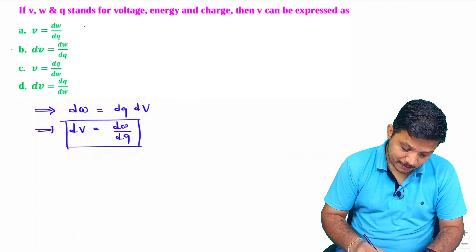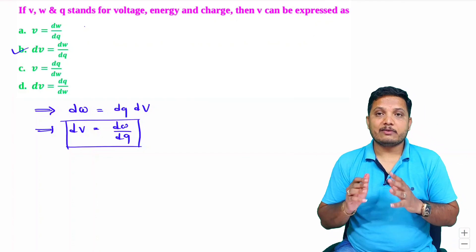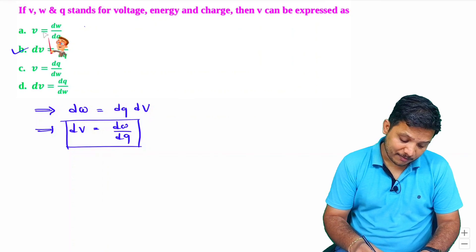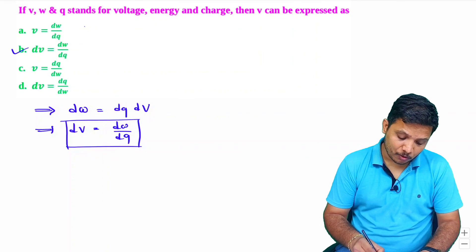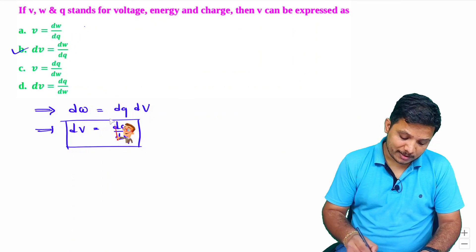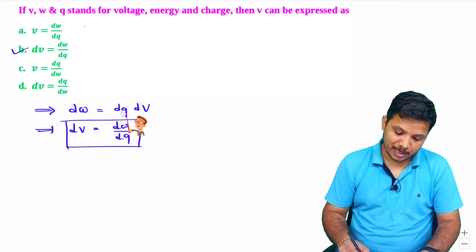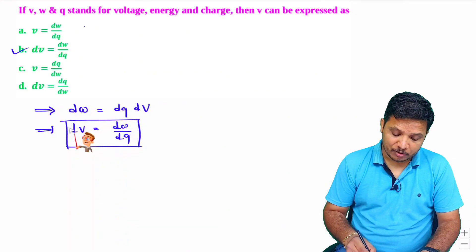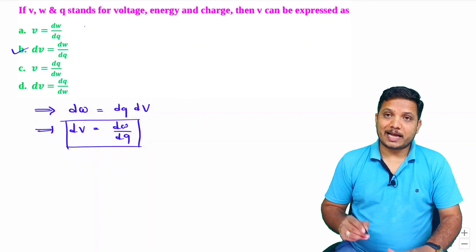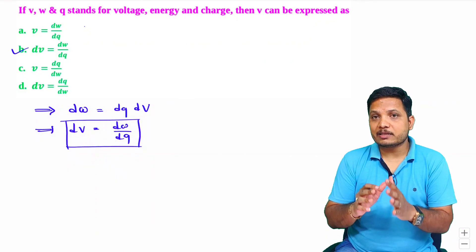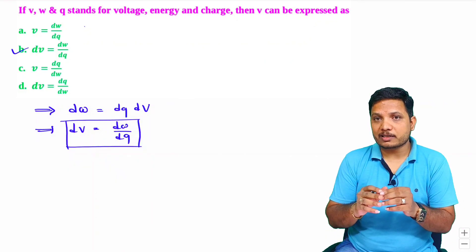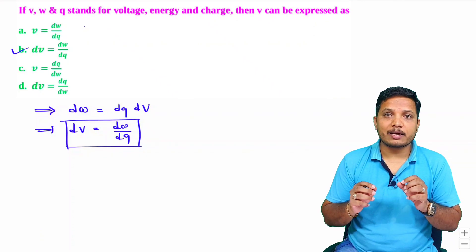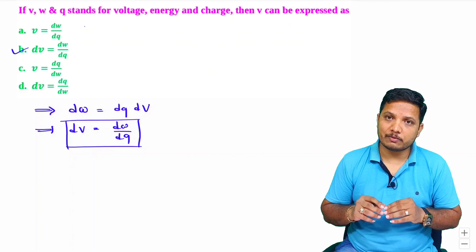The correct option is DV = DW/DQ. I have seen students making mistakes — sometimes they think V is DW/DQ directly. No — DW is DV times DQ, and to have complete voltage you need to do integration. Do not forget the integration process, otherwise you will always have a false calculation.